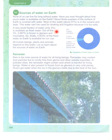Sources of water on Earth: Most of the water, about 97%, is in the oceans and in the seas. This water can't be used for drinking and irrigation because it is too salty. A very small fraction of the water, that is only 3%, is available as fresh water. Out of this 3%, 2.997% is frozen in glaciers and mountains.